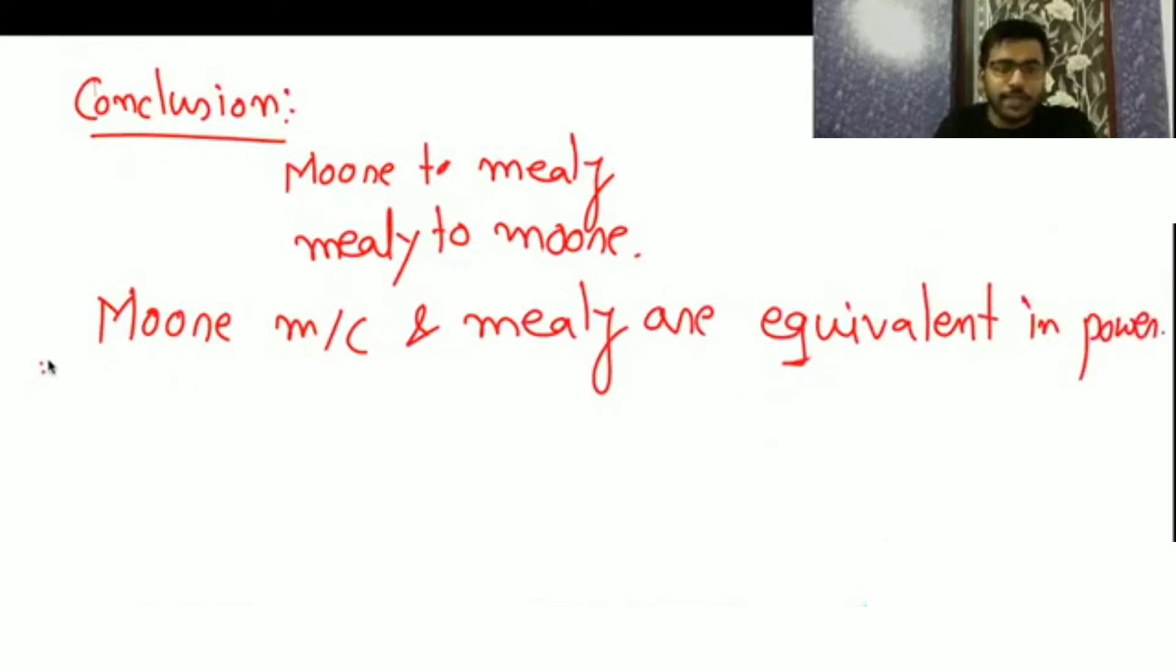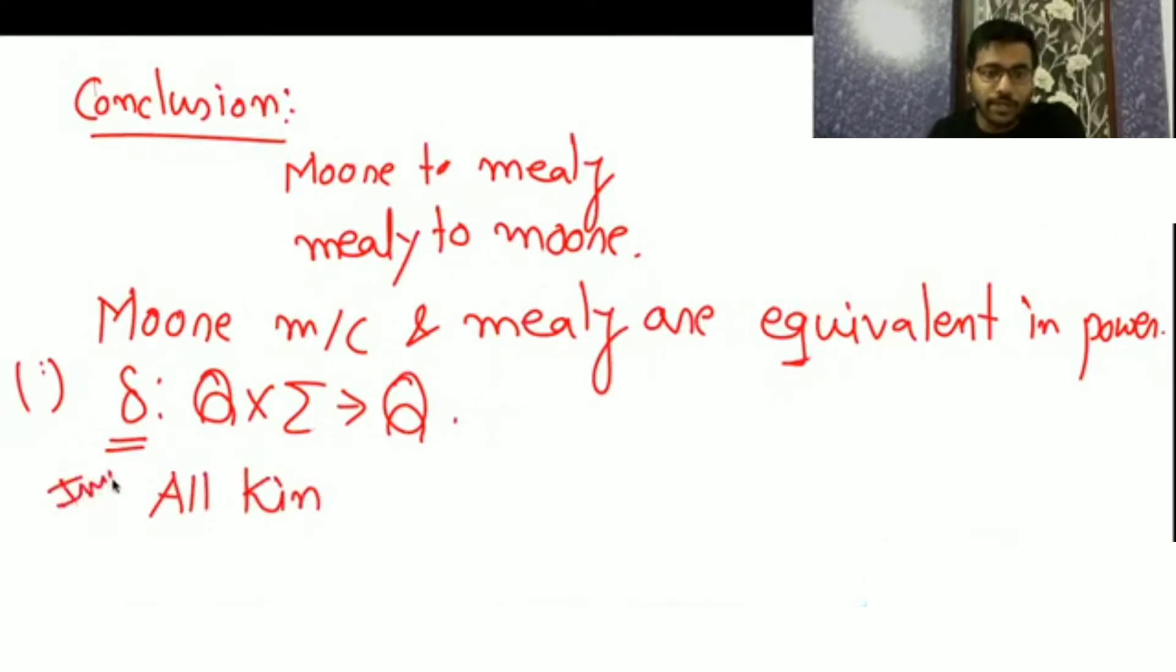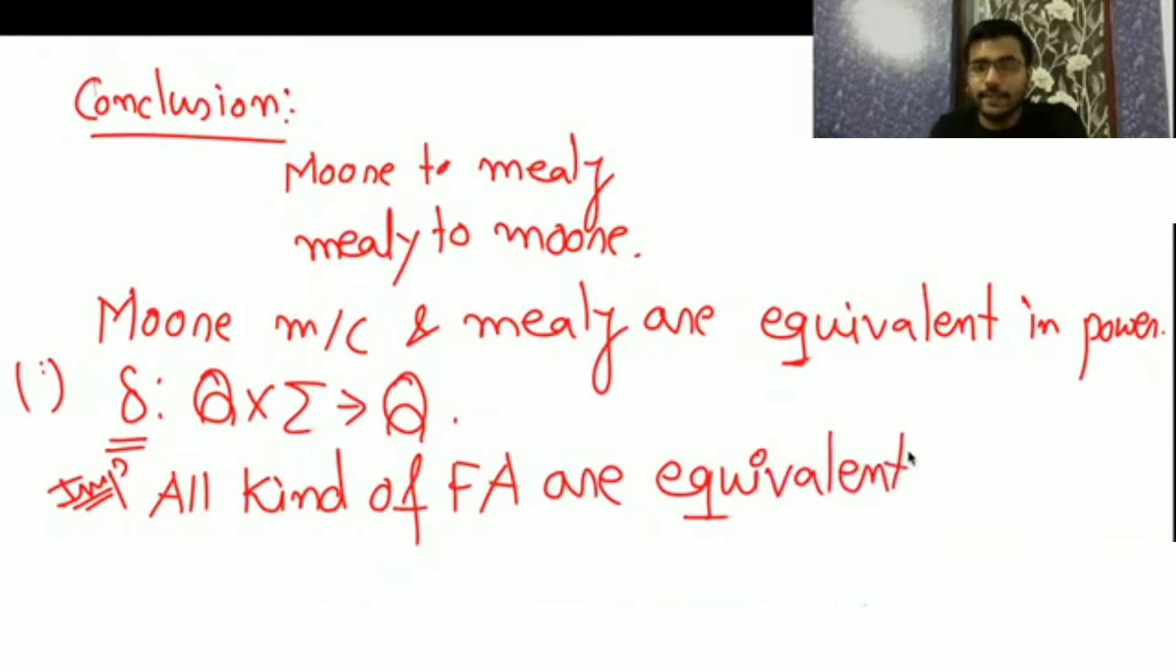And we have even known that DFA, epsilon NFA, NFA - even all these three are equivalent in power. And Moore and Mealy machine are having delta same as DFA Q cross sigma goes to Q. It is actually a DFA only, because the transition delta is the same. So delta is going to decide the power, so we can say that all kind of FA are equivalent in power.